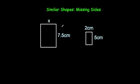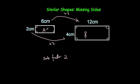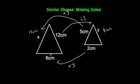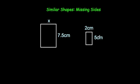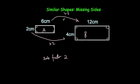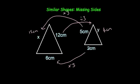Let's have a look at another question. This time we have got two rectangles and they are similar. This one's got a height of 7.5 and this one's got a height of 5. This one's got a width of X and this one's got a width of 2. The first thing to do is to find the scale factor of enlargement. If you divide the bigger one by the smaller one, it will show you the scale factor. So we do 7.5 divided by 5.